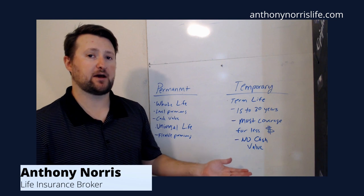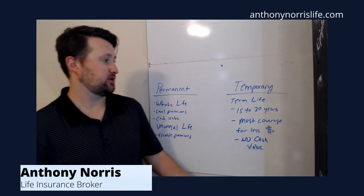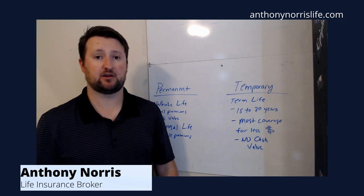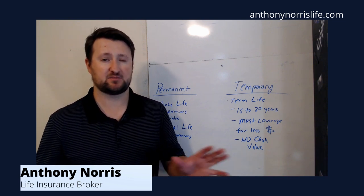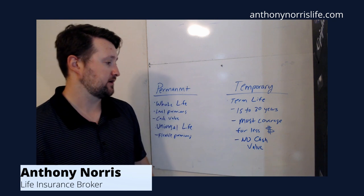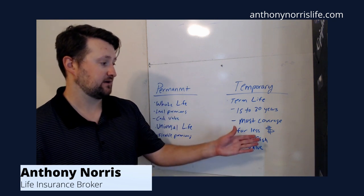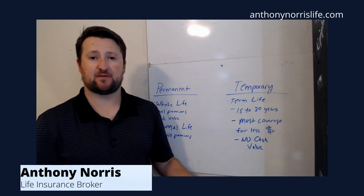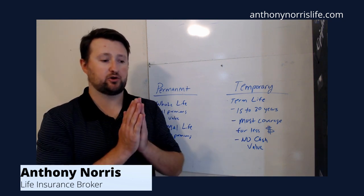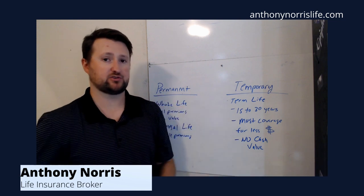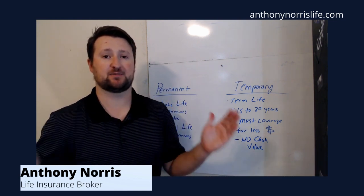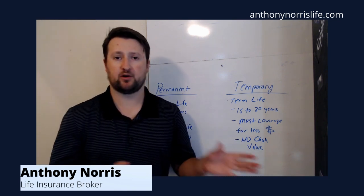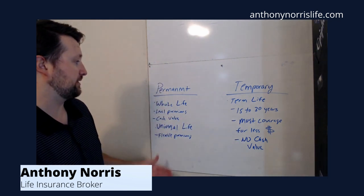Term life insurance is going to be the most coverage for the least amount of money. You can usually get coverage amounts from $25,000 all the way up to about half a million dollars without even having to get a medical exam, depending on the carrier. It's going to be less money than a permanent whole life policy because it doesn't have any cash value component — you're simply trading your premium for coverage during a specific duration of time.